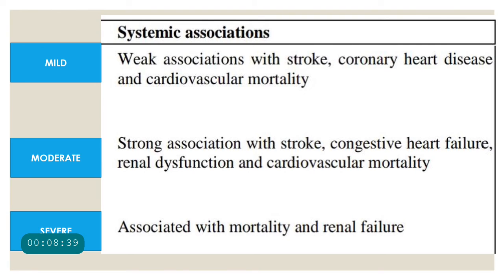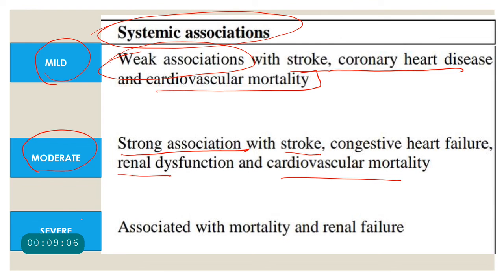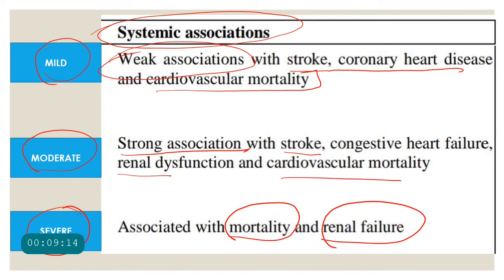Wong and Mitchell compared retinopathy grades with systemic associations. If a patient has mild hypertensive retinopathy, the association with stroke, coronary heart disease, and cardiovascular mortality is very weak. Moderate hypertensive retinopathy has a strong association with stroke, cardiovascular mortality, and renal dysfunction. Severe hypertensive retinopathy has a very strong association with mortality and even renal failure. These were the four classifications of hypertensive retinopathy.